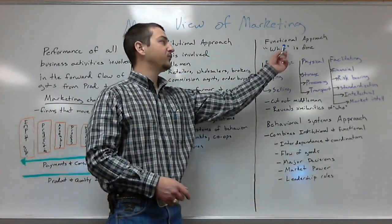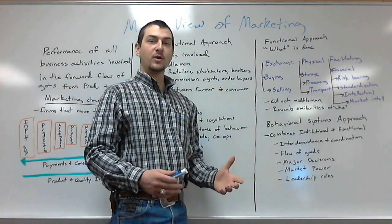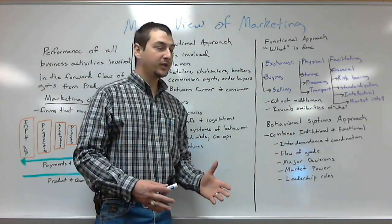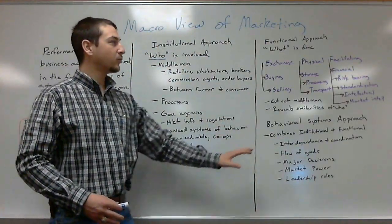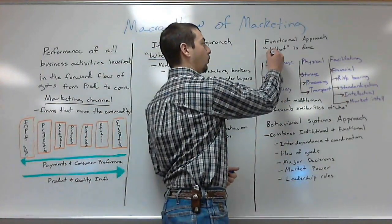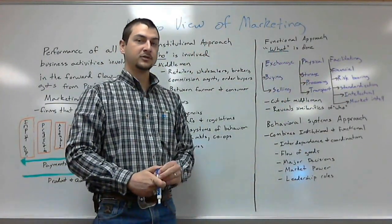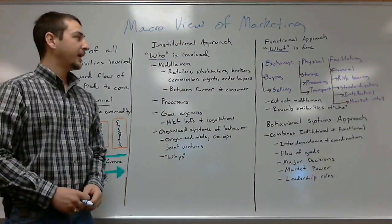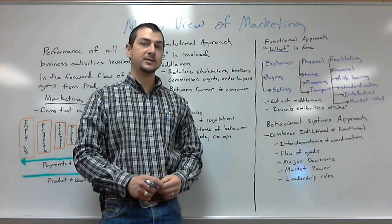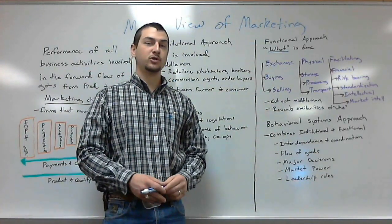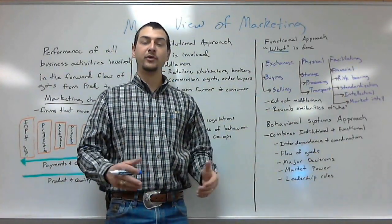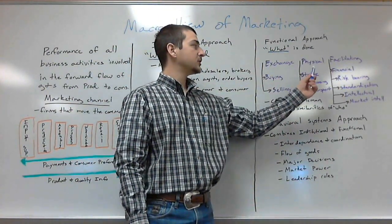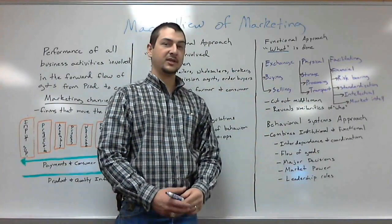The next approach is the functional approach. It looks at what needs to be done or what is being done in the marketing channel — not who is doing it, but what is being done. As you think about the institutional approach, think WHO; for the functional approach, think WHAT. We break it down into three main categories: exchange, physical, and facilitating functions.